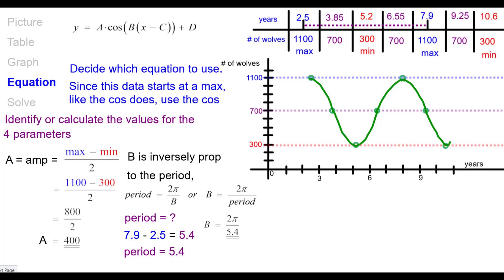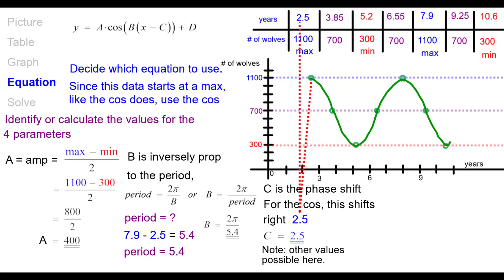That's the phase shift, or the horizontal shift. For the cosine, this shifts to the right. You can see it right up here. And it's shifting to the right, two and a half units. So C is going to be equal to a positive 2.5. Other values are possible here. If we would have gone with a sine, we could have started here on a sine curve. We could add a negative cosine and start it here. Many different options.